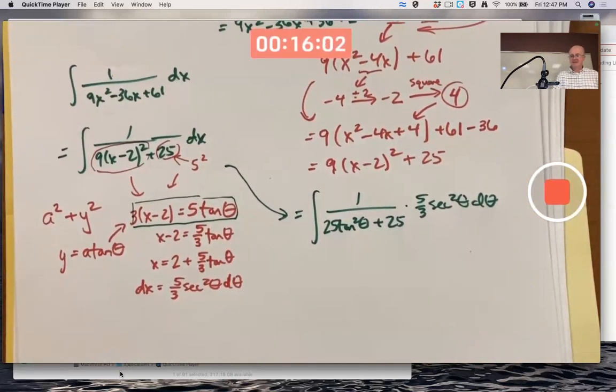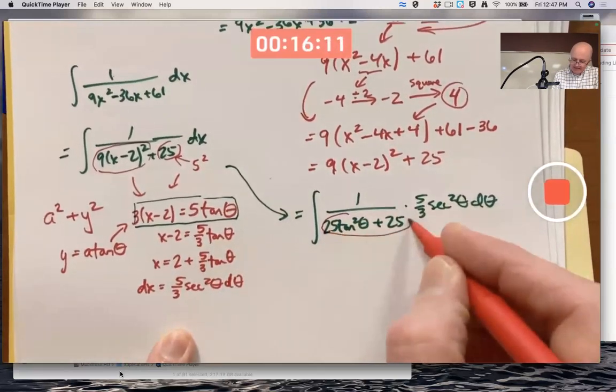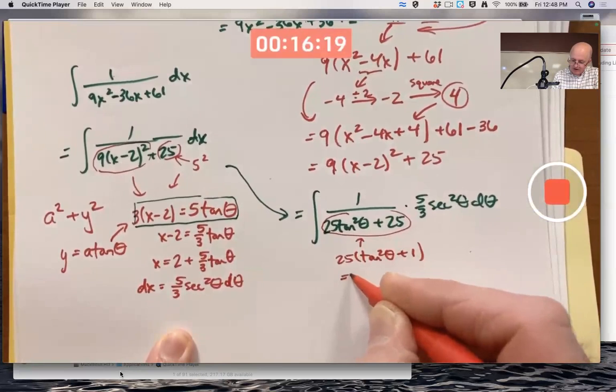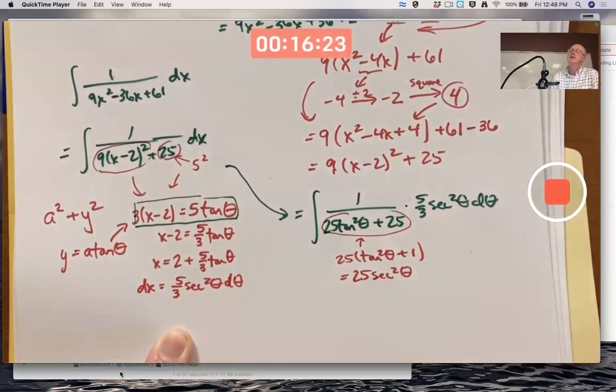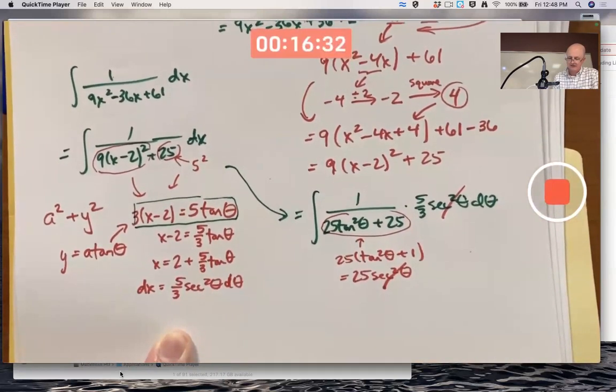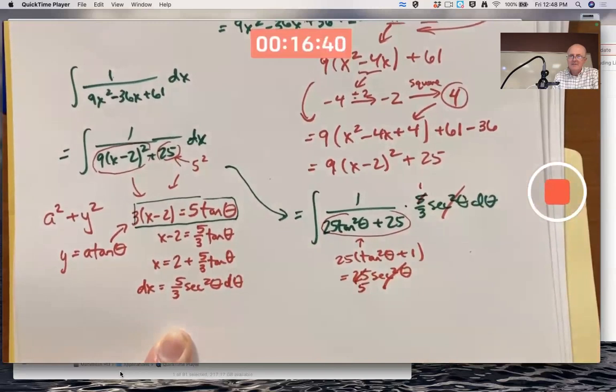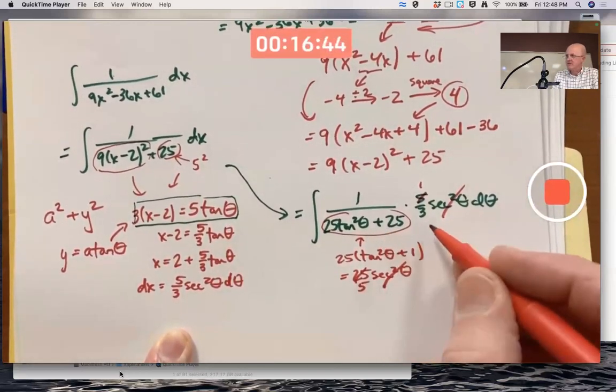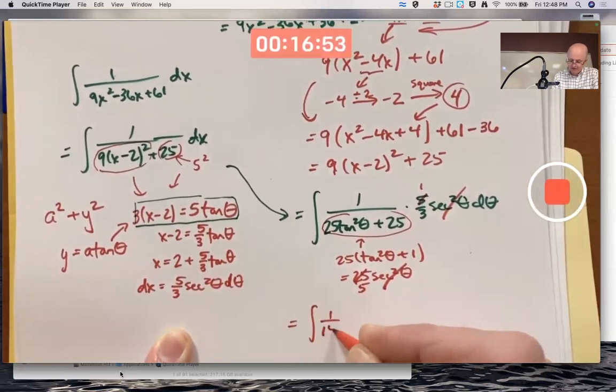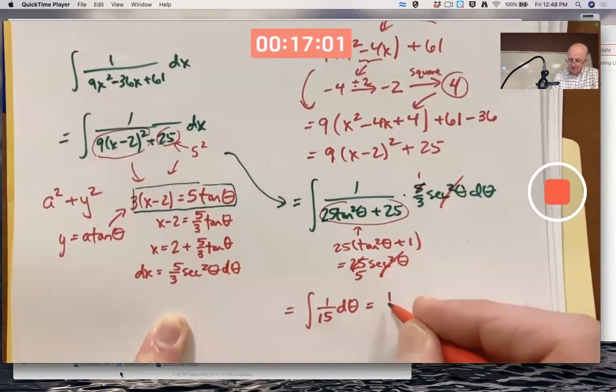It's going to simplify, believe it or not, to a constant. Why? Well, this thing is the same as 25 times (tan² θ + 1). And remember, tan² θ + 1 is secant² θ. And that makes the secant squared θ here and here completely cancel. Also, I can cancel this 5 with the 25 to leave a 5 in the bottom of the fraction. And 5 times 3 is 15 in the bottom, giving me 1/15. Which can be inside the integral or outside. This all simplifies just down to 1/15. And that's a very simple integral. 1/15 θ + C. But we're not done.